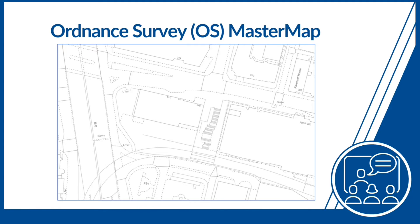The 2012 Act provides that the cadastral map must be based on the Ordnance Survey map, as did the 1979 Act before it. The current base map for the cadastral map is a product the Ordnance Survey call Master Map. This is a digital map covering the whole of the UK, including Scotland. This extract of Master Map shows our office in Glasgow at St Vincent Plaza beside the M8 motorway. Master Map was derived from historical maps that the Ordnance Survey have published over the years, such as the county series and landline products.